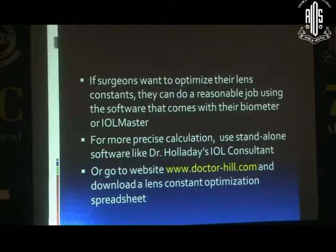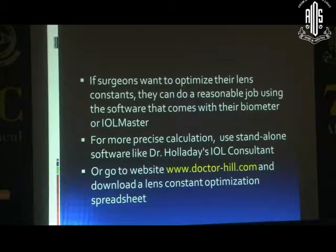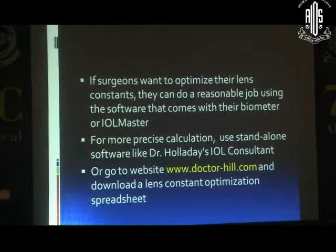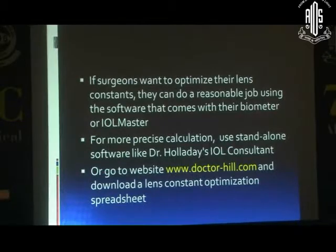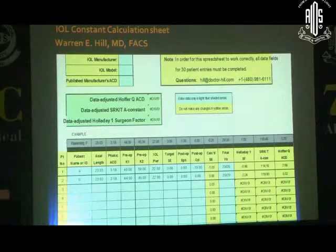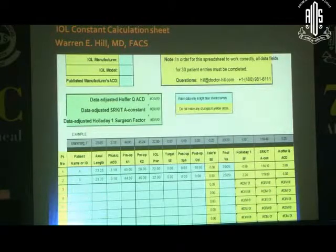If surgeons want to optimize their lens constant, they can do a reasonably good job using the software that comes with their biometer or IOL Master. For more precise calculation, use standalone software like Dr. Holladay's HIC — Holladay IOL Consultant — or go to the website of Dr. Warren Hill, who would be happy to do that for you for free. This is the spreadsheet of Dr. Warren Hill, where you send your data and they get back to you with the constant.